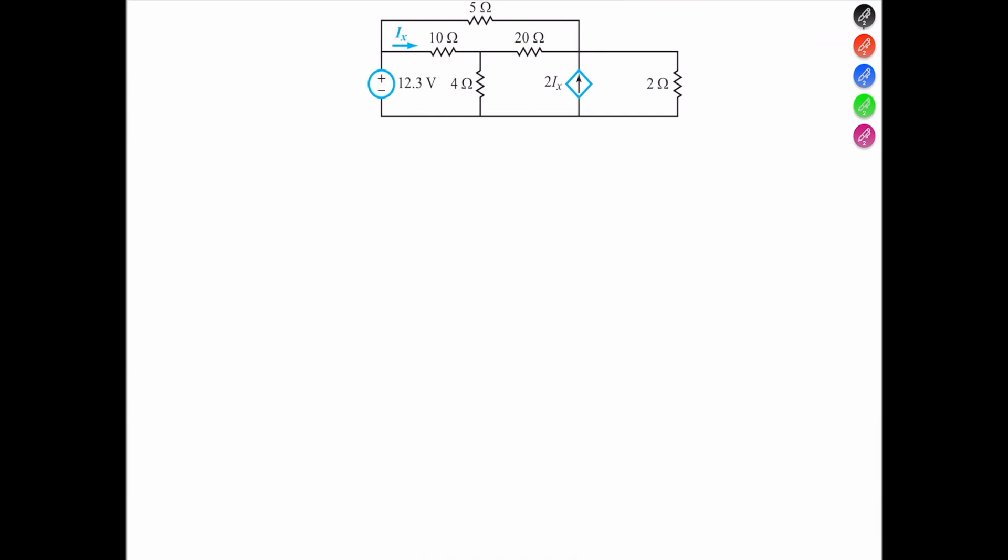To determine the current Ix, the first thing we want to do is write the equation for Ix. So the current Ix is equal to, if you notice, the voltage at that terminal is going to be 12.3 volts.